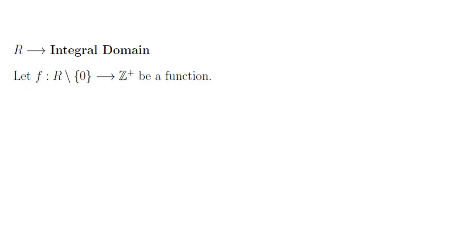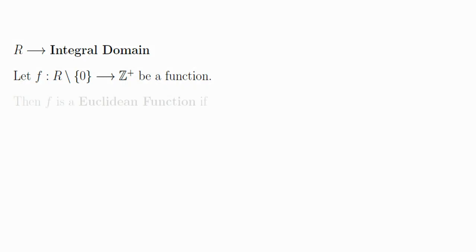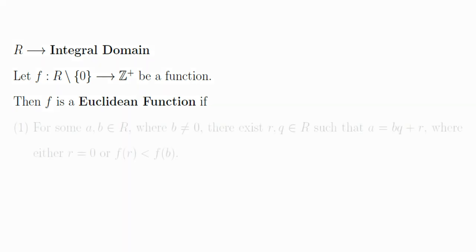Let f be a function defined on an integral domain R whose domain contains all the non-zero elements of R and co-domain contains all the non-negative integers. Then the function f is said to be a Euclidean function if it satisfies two conditions.